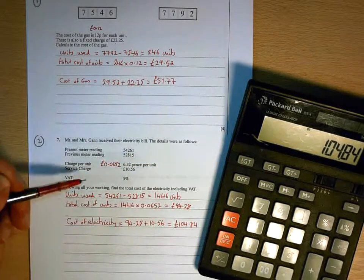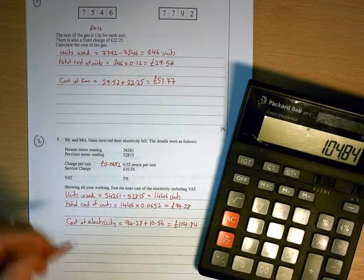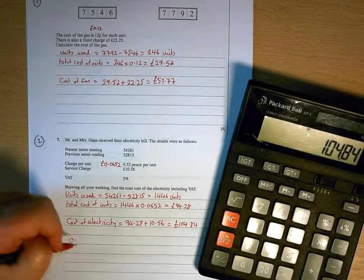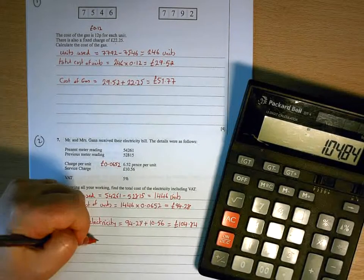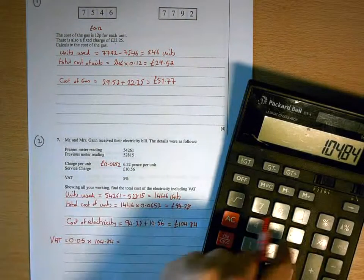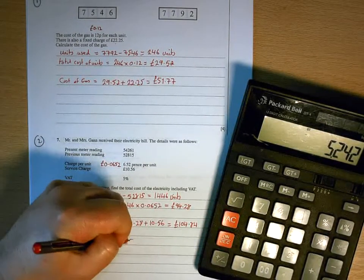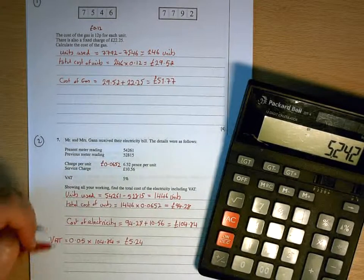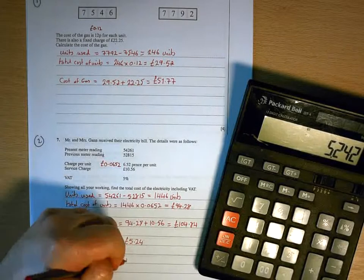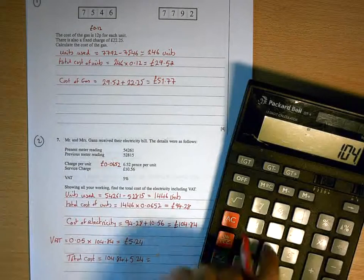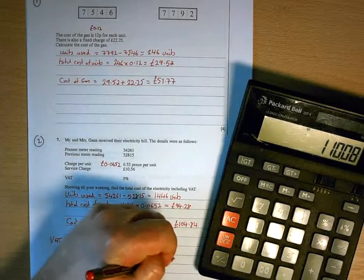Now, in this particular question, we've got VAT to add on to that as well. So VAT is 5%. 5% written as a decimal is 0.05. Multiply that by the cost of our bill, which is £104.84. And that will tell us how much we've got to add on to our bill. So that's going to be £5.24. So for this particular question, the total cost of the bill will be £104.84 plus the £5.24 for the VAT. Giving us a total bill of £110.08.